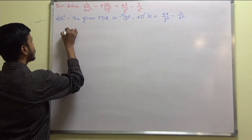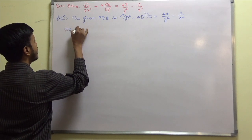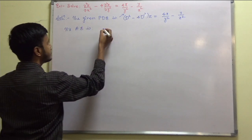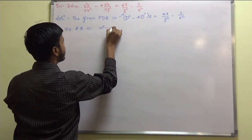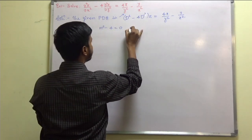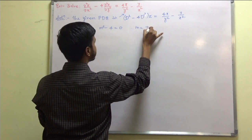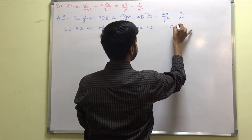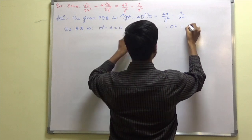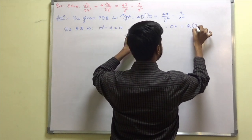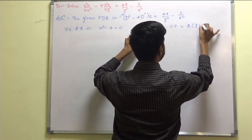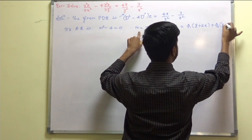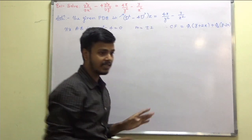Write down its auxiliary equation. The auxiliary equation is M² minus 4 equal to 0. Therefore M is equal to plus or minus 2. Therefore CF is equal to φ₁(y + 2x) + φ₂(y − 2x). This is the CF.